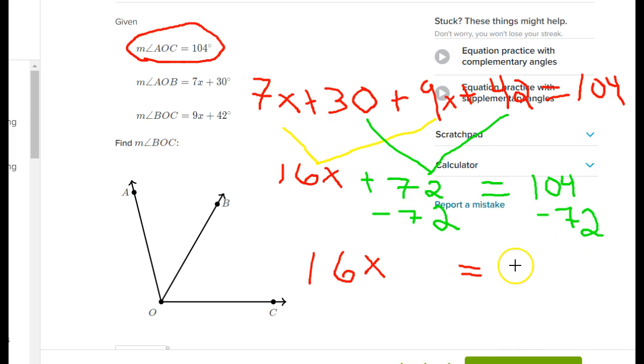Now I want to solve for x, so I'm going to divide by 16 on both sides, and I get x equals 2. Now that doesn't mean I'm done. I've just figured out what x is.